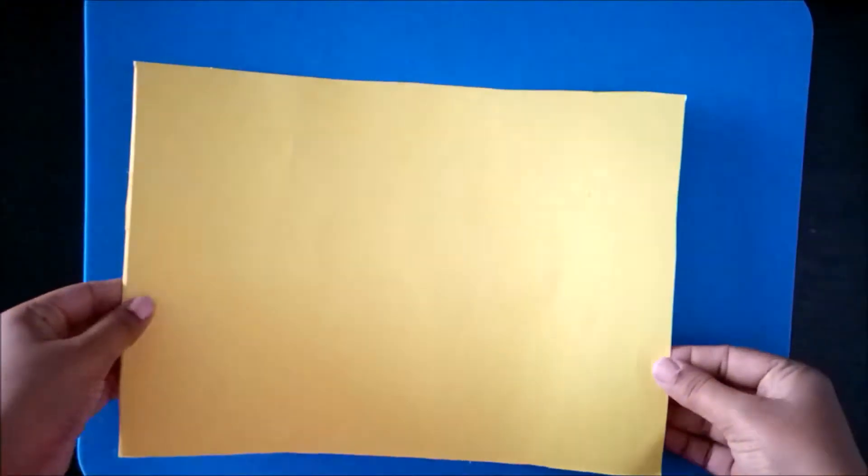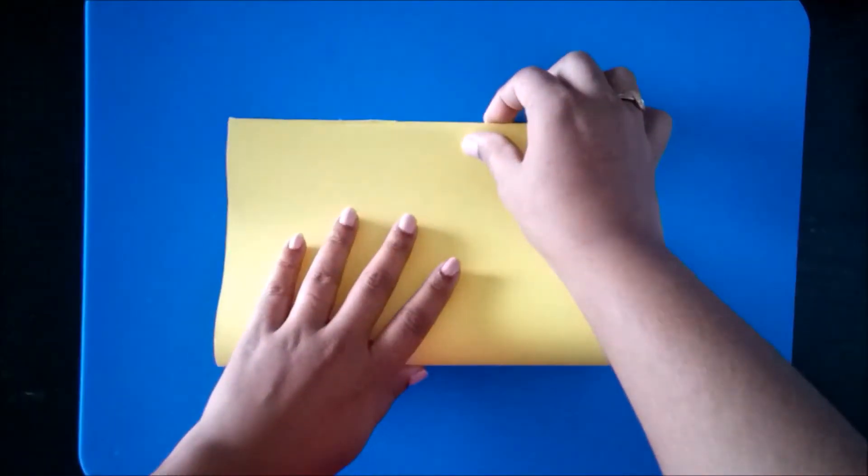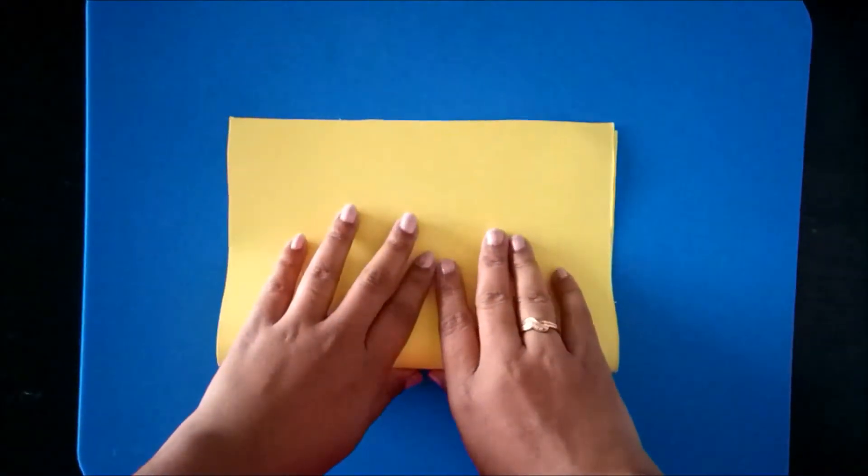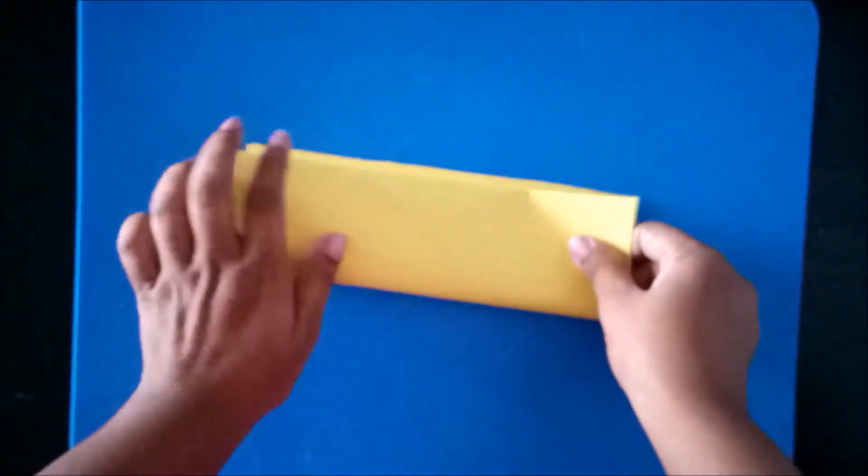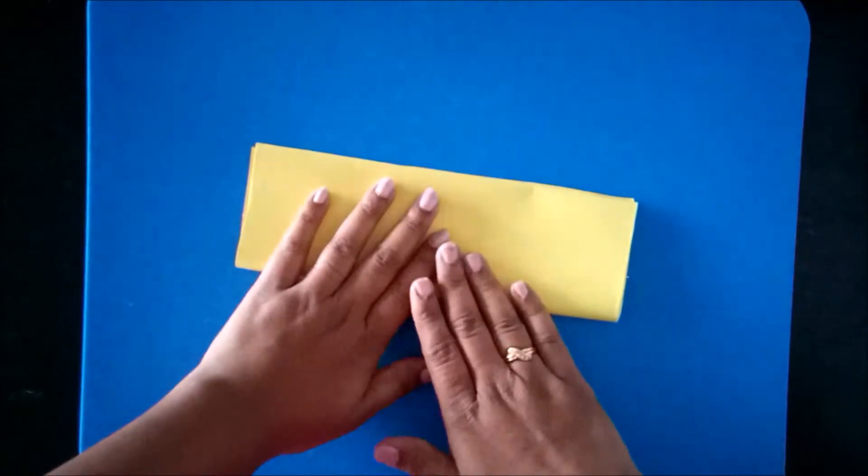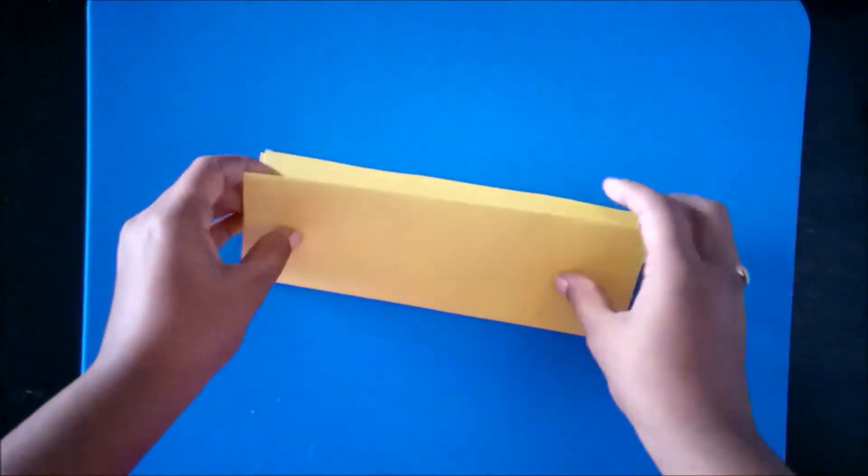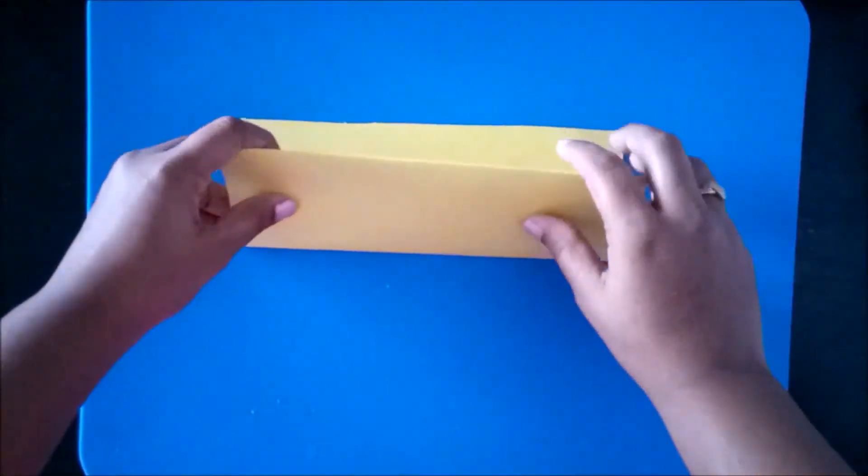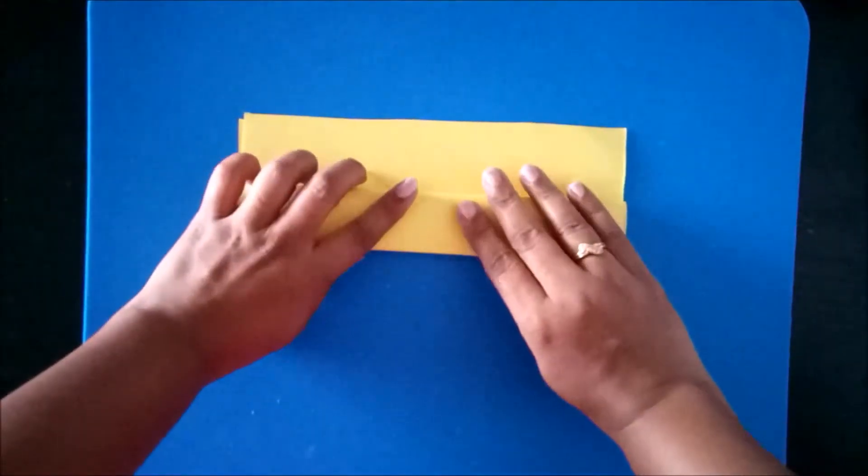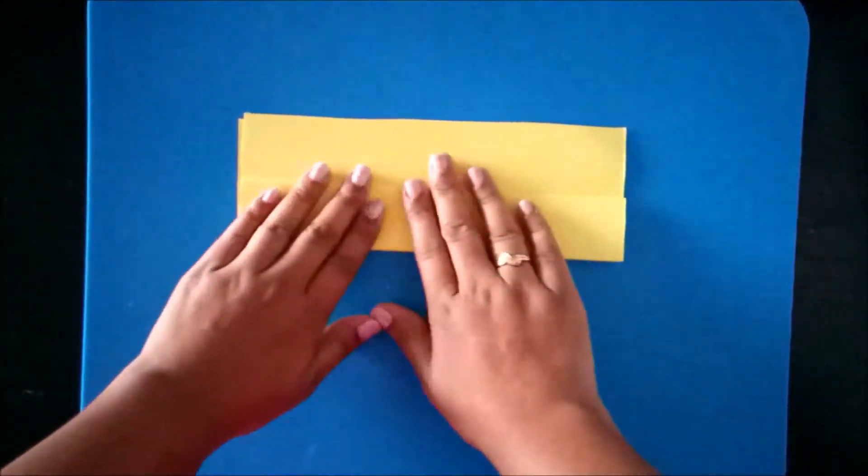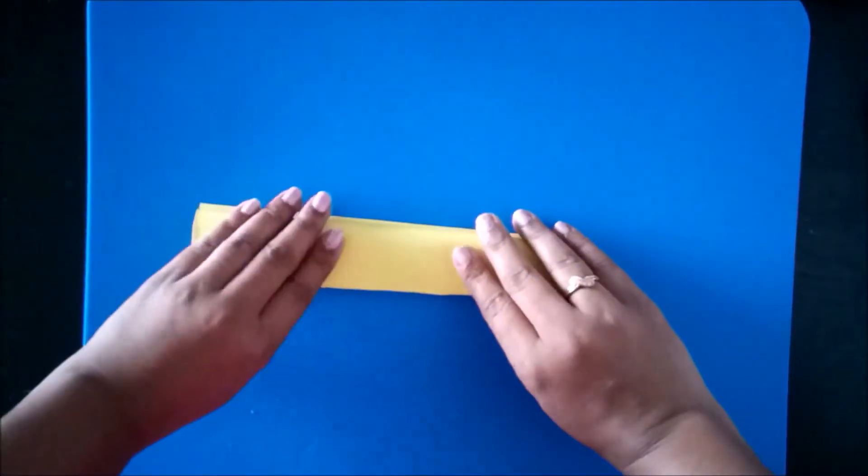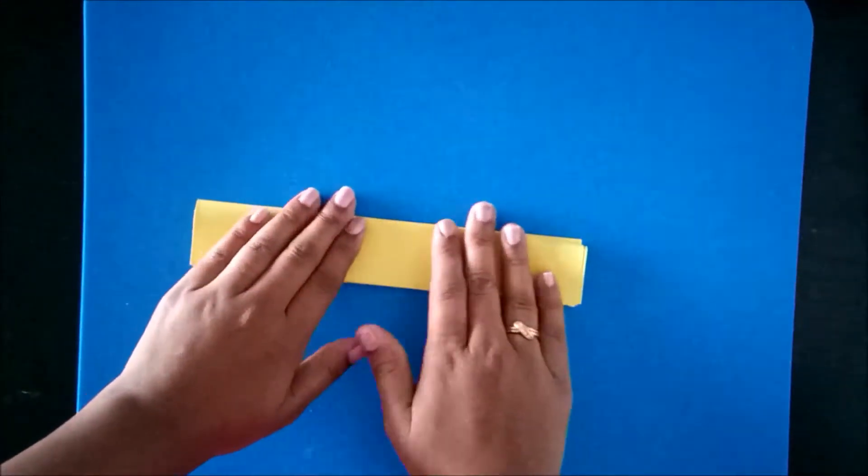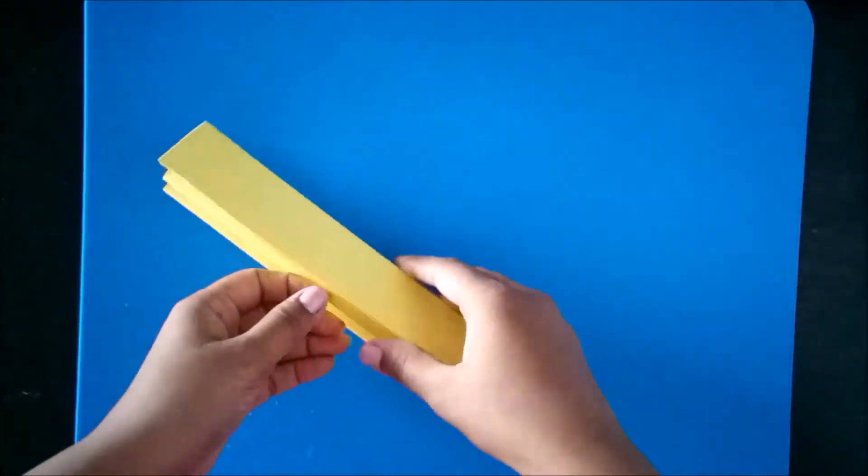First take a sheet and fold it into equal half. Now again fold it half and open the sheet. Now fold both sides again to half like this. So by doing this you get equal and neat zigzag folds.